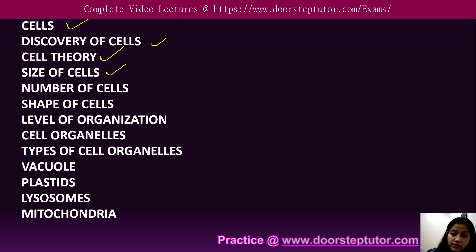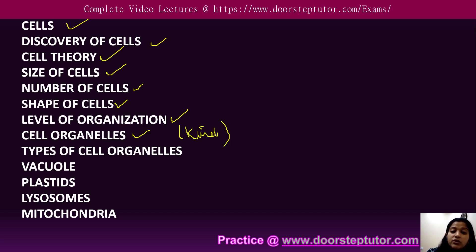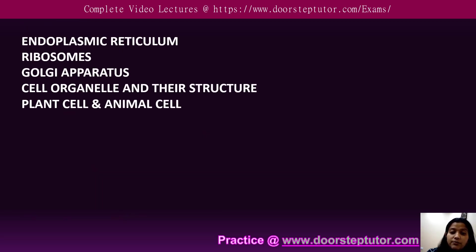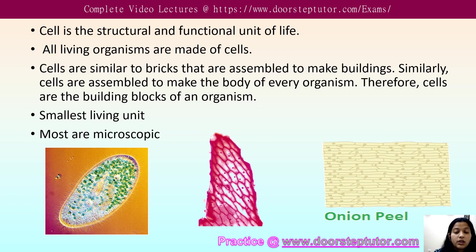We will cover different kinds and sizes of cells, the number of cells, the shape of cells, and their level of organization. We will look at different kinds of cell organelles present in plant cells, animal cells, and different kinds of cells. We will also talk about vacuoles, plastids, lysosomes, mitochondria, endoplasmic reticulum, ribosomes, Golgi apparatus — a comprehensive guide to cell organelles and the differentiation between plant and animal cells.